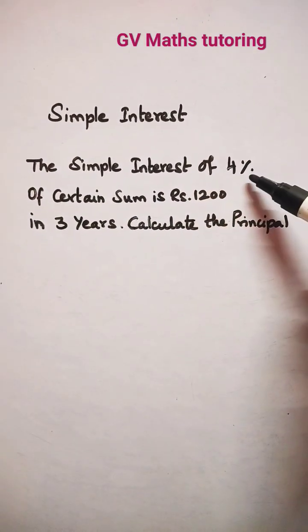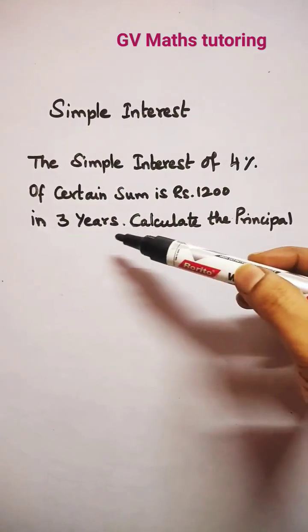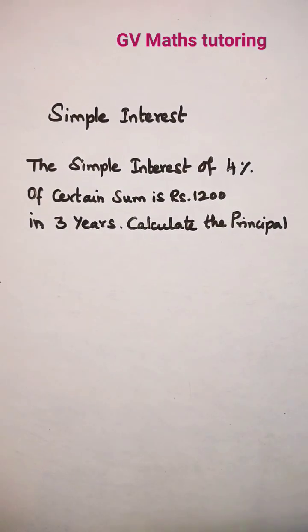The simple interest of 4% of certain sum is Rs. 1200 in 3 years. Calculate the principal value.